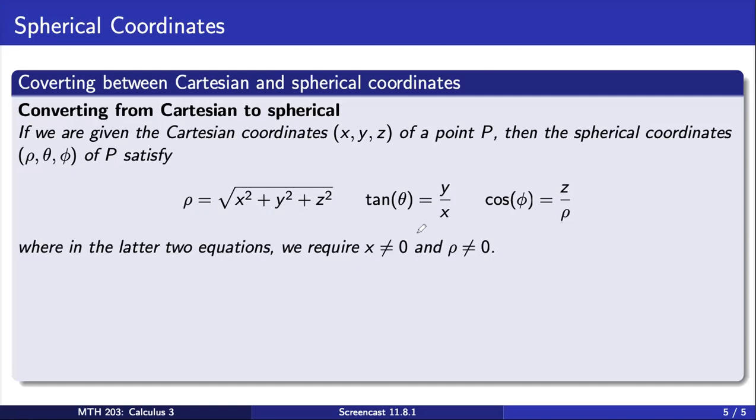The second formula should look familiar from cylindrical and polar coordinates: tangent θ equals y/x. And the third is the expression we'll use to get φ: cosine φ equals z/ρ. For the latter two equations, we require that x is non-zero and ρ is non-zero.